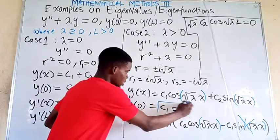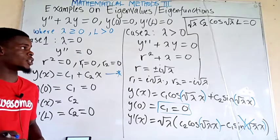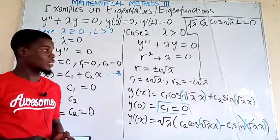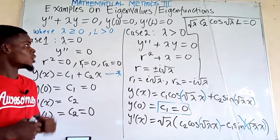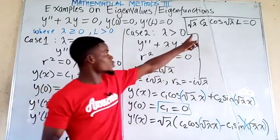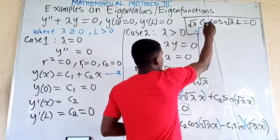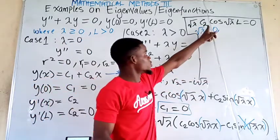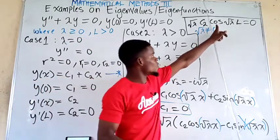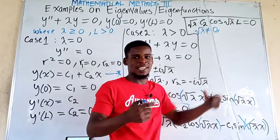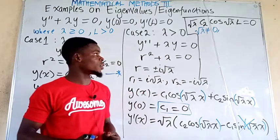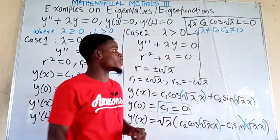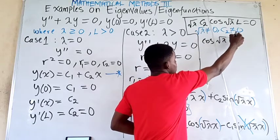In case 2 lambda is bigger than 0, so square root of lambda is nonzero no matter what. We also do not allow c2 to be zero because that would give a trivial solution. Therefore the only possibility for the equation to hold is that cosine of root lambda times l must equal zero.